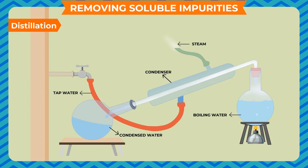Removing soluble impurities: soluble impurities are removed by distillation, boiling, and chlorination. In distillation, water having soluble impurities is heated until it becomes steam, and then this steam is allowed to condense in a condenser. The condensed water is free from impurities — this process is known as distillation. The pure water obtained after distillation is known as distilled water, which is used in batteries and laboratories.